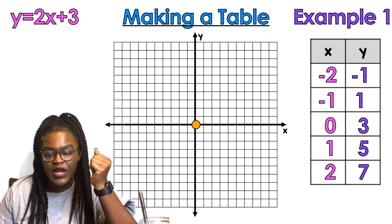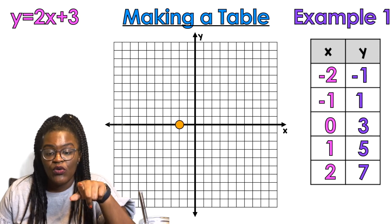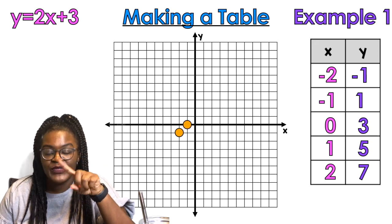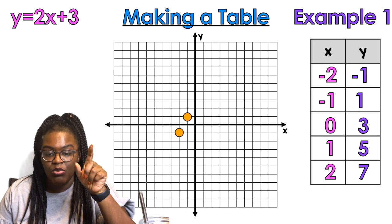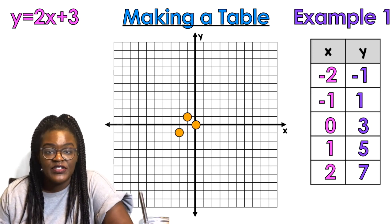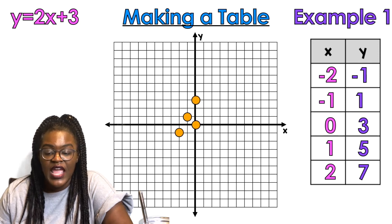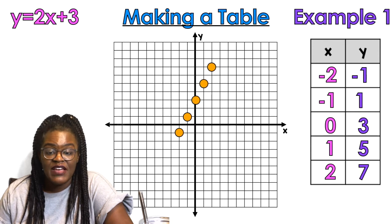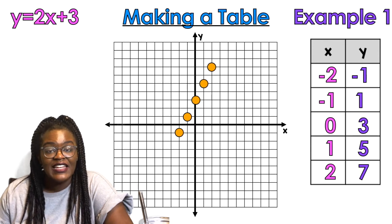Let's graph this. The first ordered pair is negative two comma negative one — starting from the origin, go over two spaces and down one space. The next point is negative one comma one: over negative one, up one. Zero comma three: I'm not going left or right since x is zero, so just go up three spaces. Then one comma five: go right one space, up five spaces. Last, starting from the origin, go over two spaces and up seven spaces — and that makes a beautifully straight line.